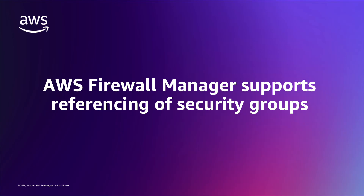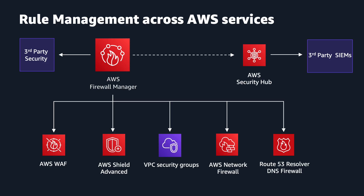Hello everyone. AWS Firewall Manager allows you to configure and manage firewall rules across your accounts and applications in AWS Organizations. Today, I will show you how you can use AWS Firewall Manager to reference security groups in the peer VPC to enhance your application protection. AWS Firewall Manager simplifies your administration and maintenance tasks across multiple accounts and resources for a variety of protections, including AWS WAF, AWS Shield Advanced, Amazon VPC Security Groups, AWS Network Firewall, and Amazon Route 53 Resolver DNS Firewall.